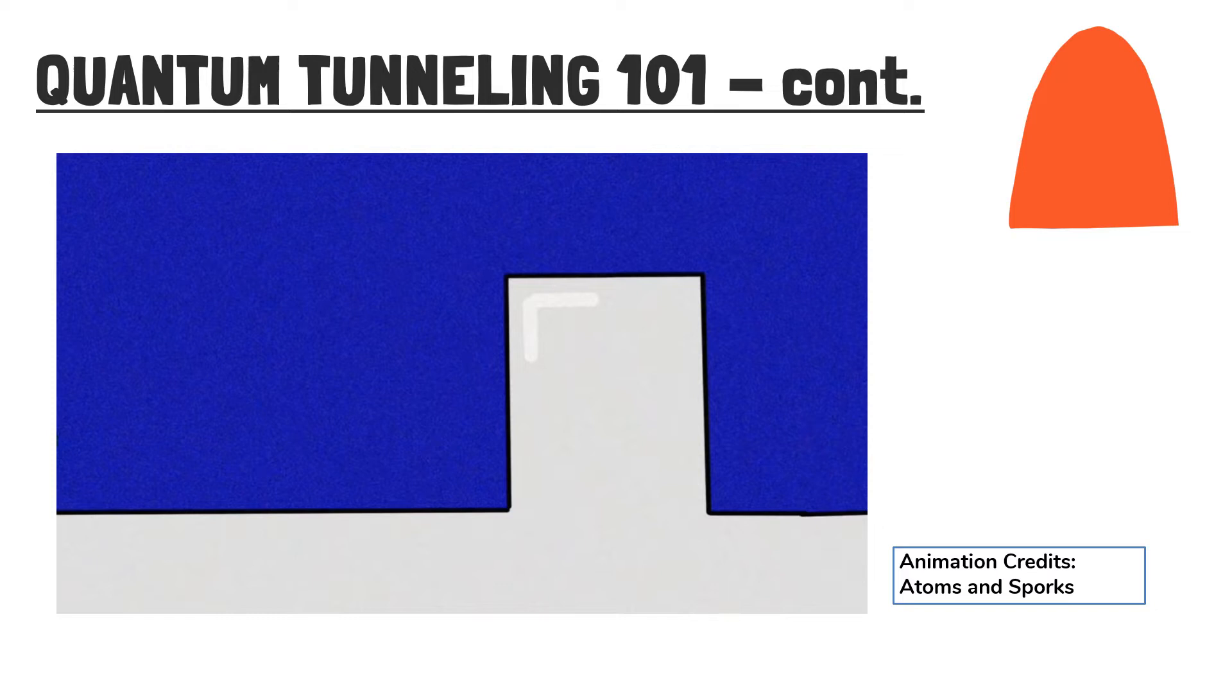it is reflected back and an evanescent wave is produced at the boundary. Some of the waves can make it through to the other side. This transmitted wave then represents the probability of finding the electron on the other side of the barrier.